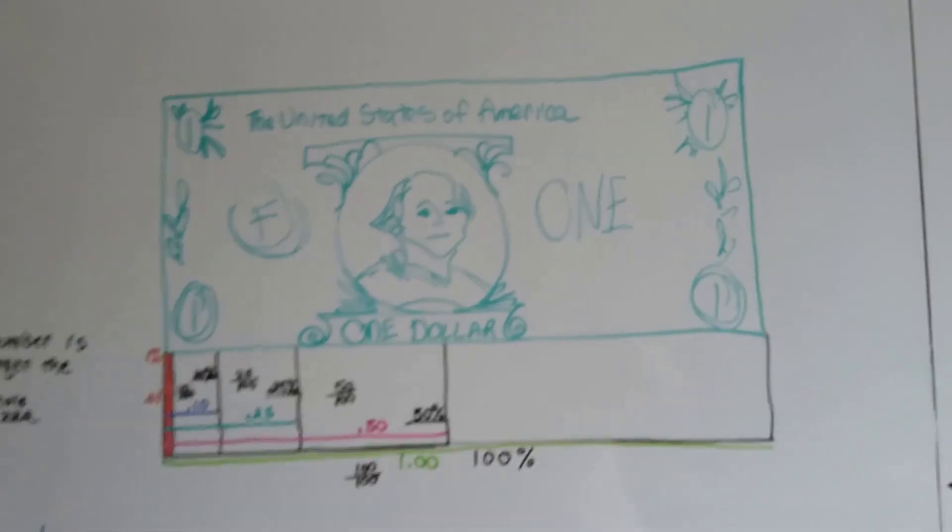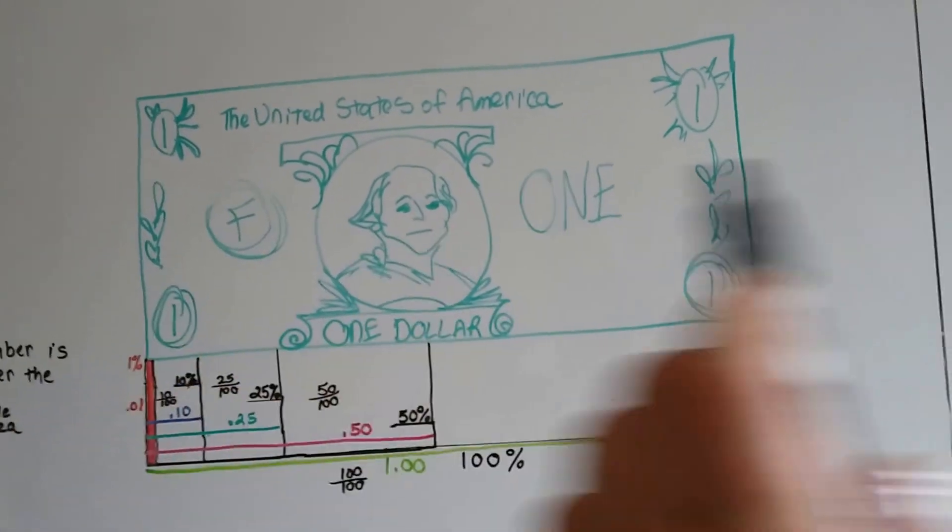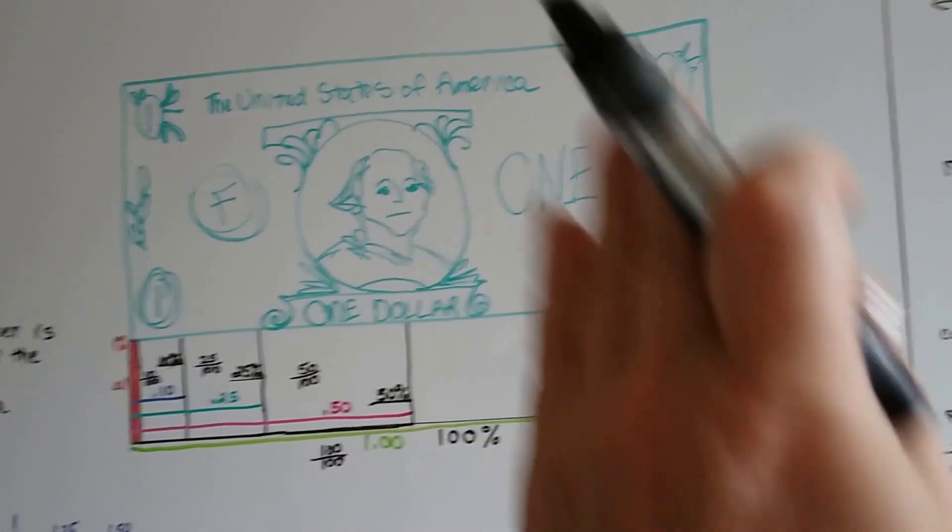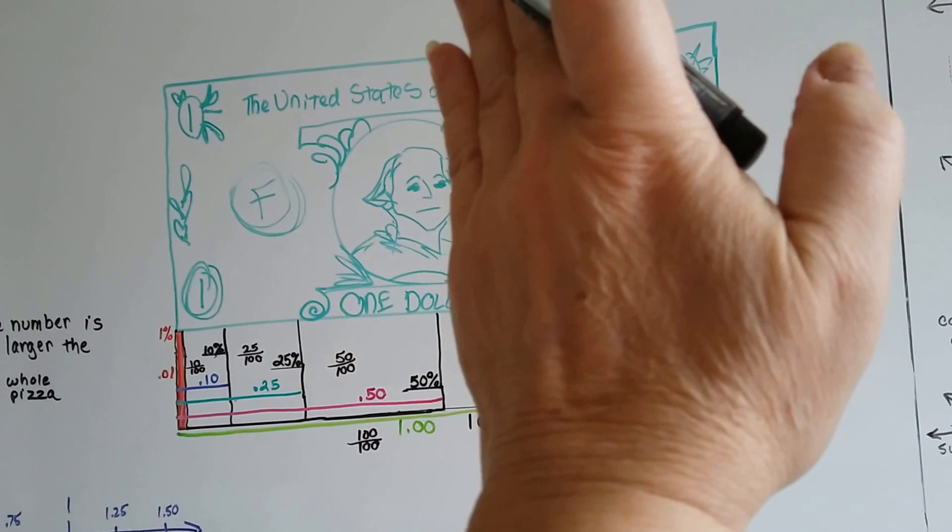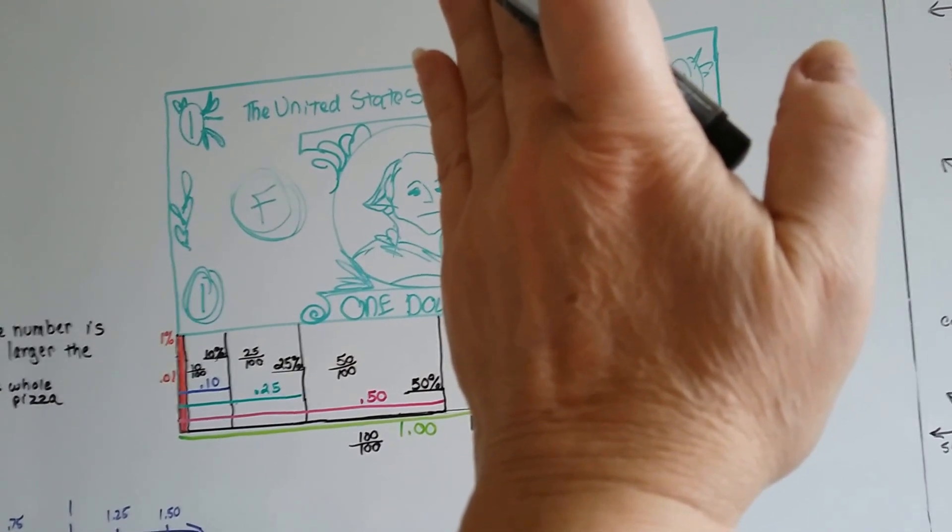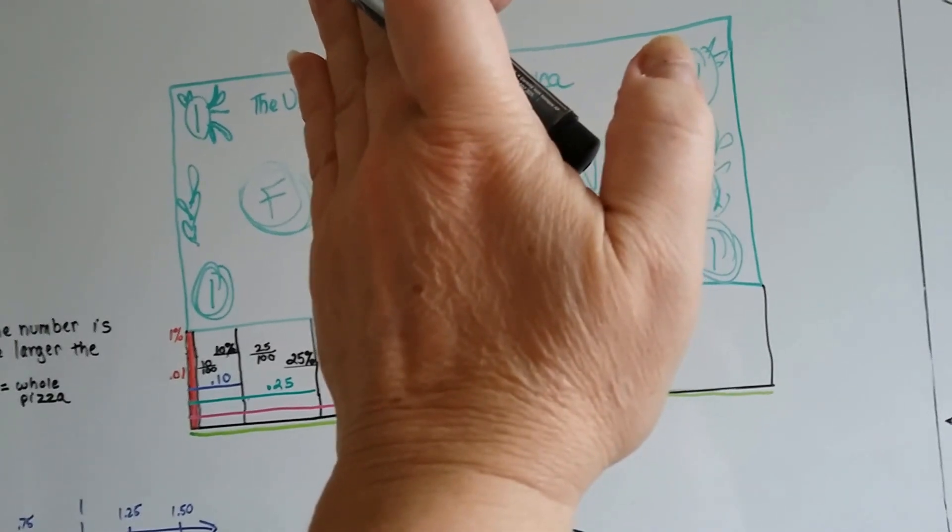If we had a dollar, this would be 100 percent of the dollar, the whole dollar. 50 percent of the dollar would be half of it. It would be this much. That would be 50 cents of the 100 pennies.